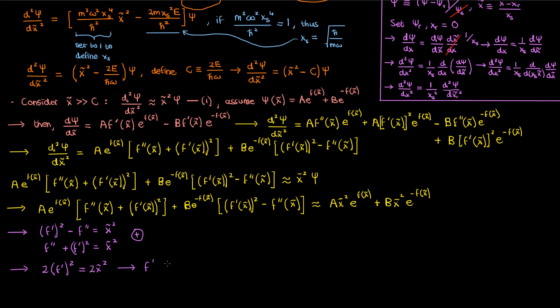Simplifying this leaves us with f prime equals plus minus x tilde, which therefore means that the function f is given by plus or minus x tilde squared over 2. Now it doesn't matter whether we use the minus or plus here since both signs are covered in our formulation of psi.